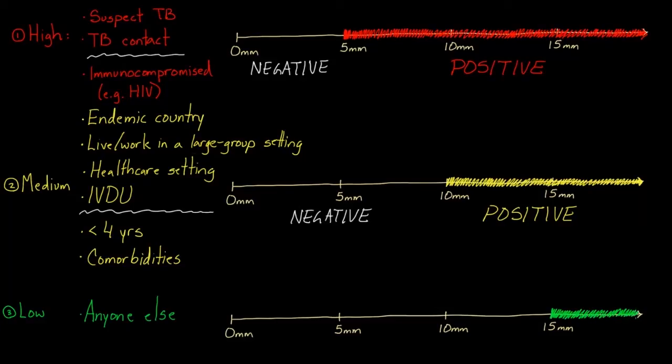And so if you have someone that is very healthy and doesn't fit into any of the other things that we just talked about, and their PPD is 20 millimeters, then they would be considered positive. But if it was only 13 millimeters, somewhere in this other range down here, then they would be considered negative.